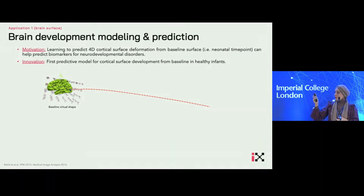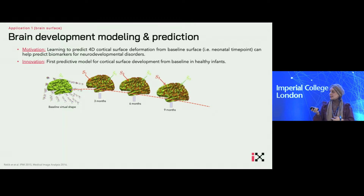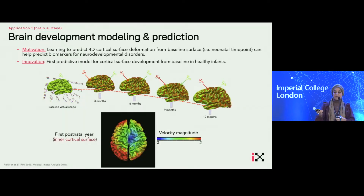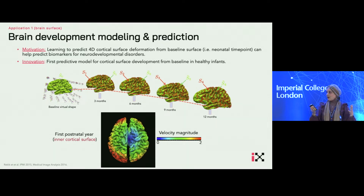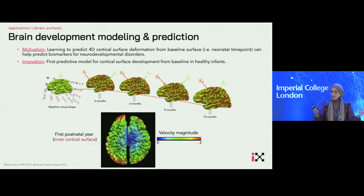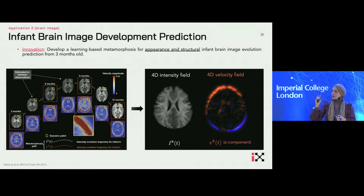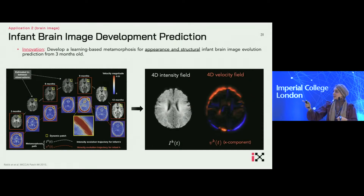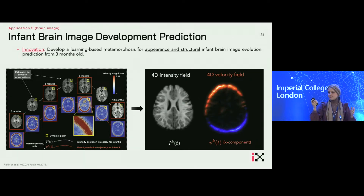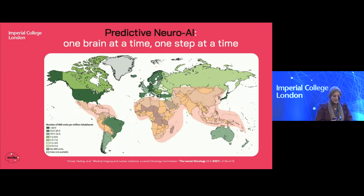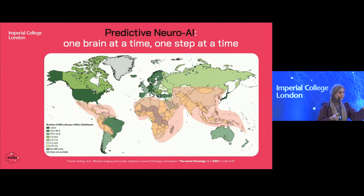Just before I wrap up, I want to show you this amazing video. We were able to predict the evolution of the brain cortical surface of a newborn over the first year of postnatal development — you can see the velocity of the growth. We can use AI to predict typical and atypical development of babies at risk of schizophrenia and other diseases. We can also translate these methodologies to the image space, predicting the evolution of the picture of your brain over time. Predictive neuro AI — there's a whole lot to do. One brain at a time, one step at a time. I hope AI will help us clean up our mess, but also create so many awesome things. Thank you.